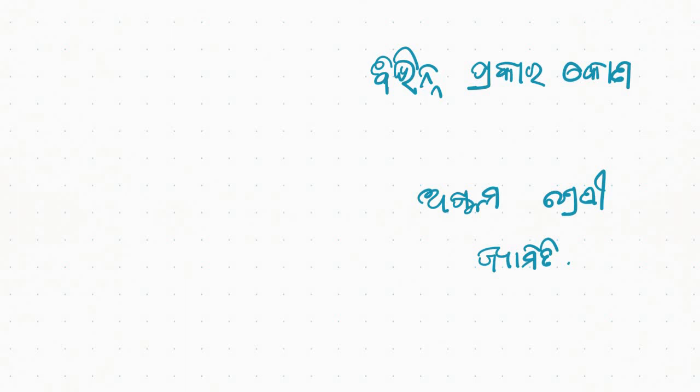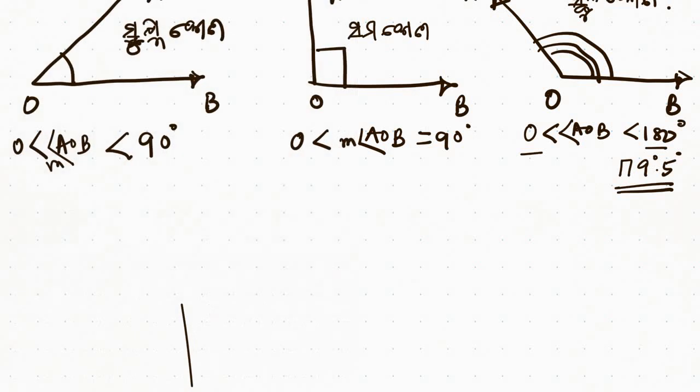I'm going to ask you about the first chapter of the body, and the last section: how do I work? If I work with 0 degrees, if I work with 90 degrees or less, I work with that. If I work with 90 degrees, I work with 0 degrees — but it will be less than 180 degrees.